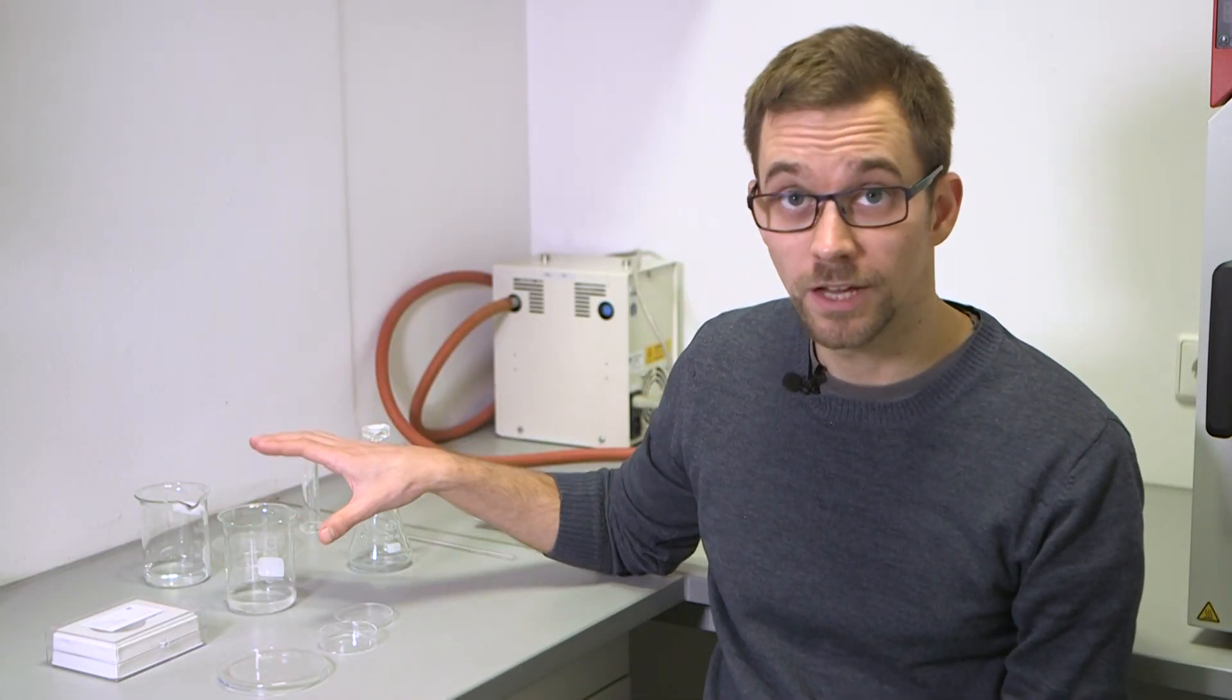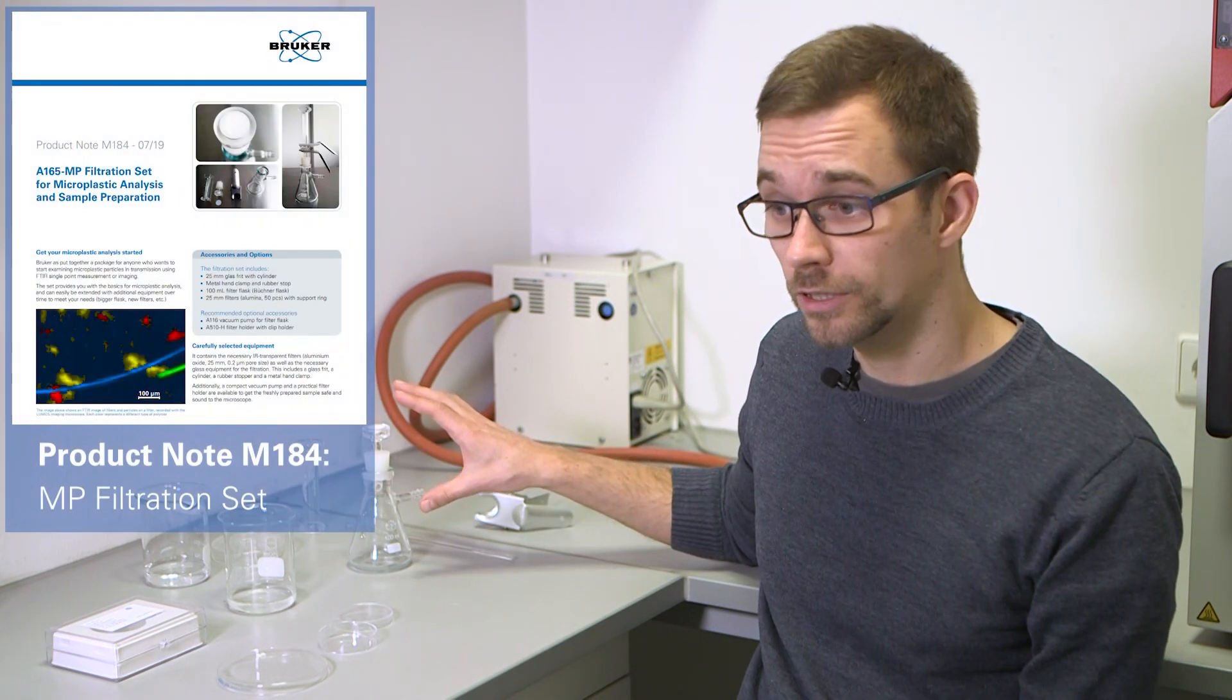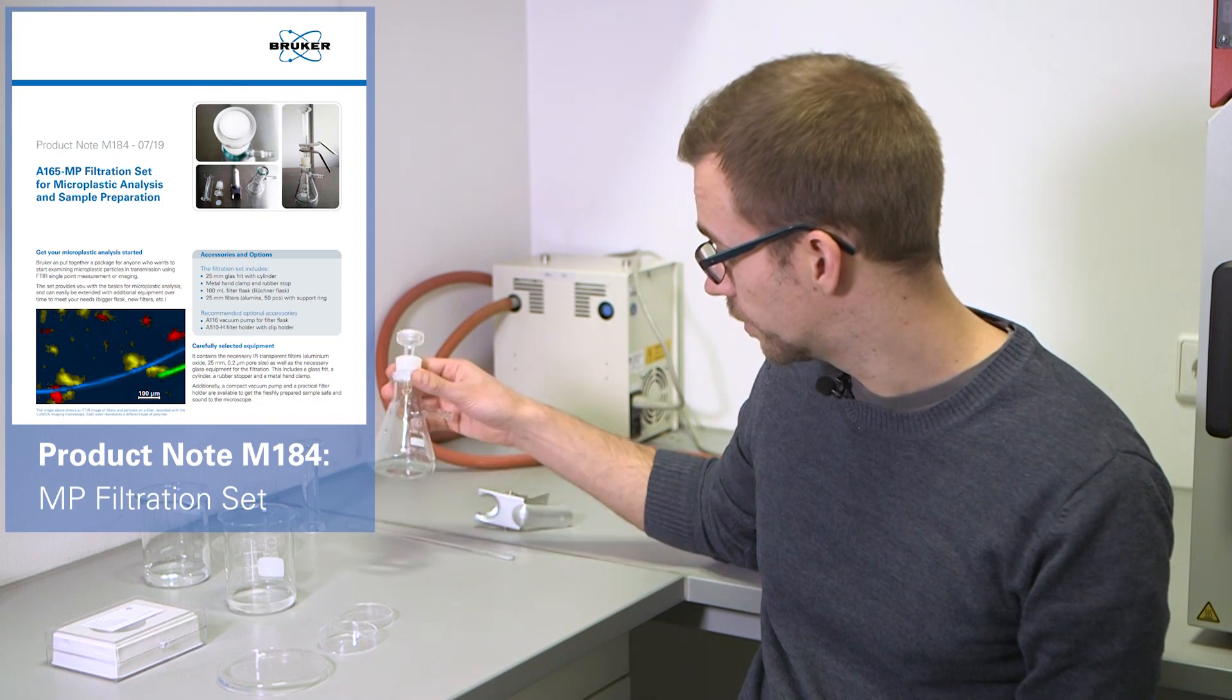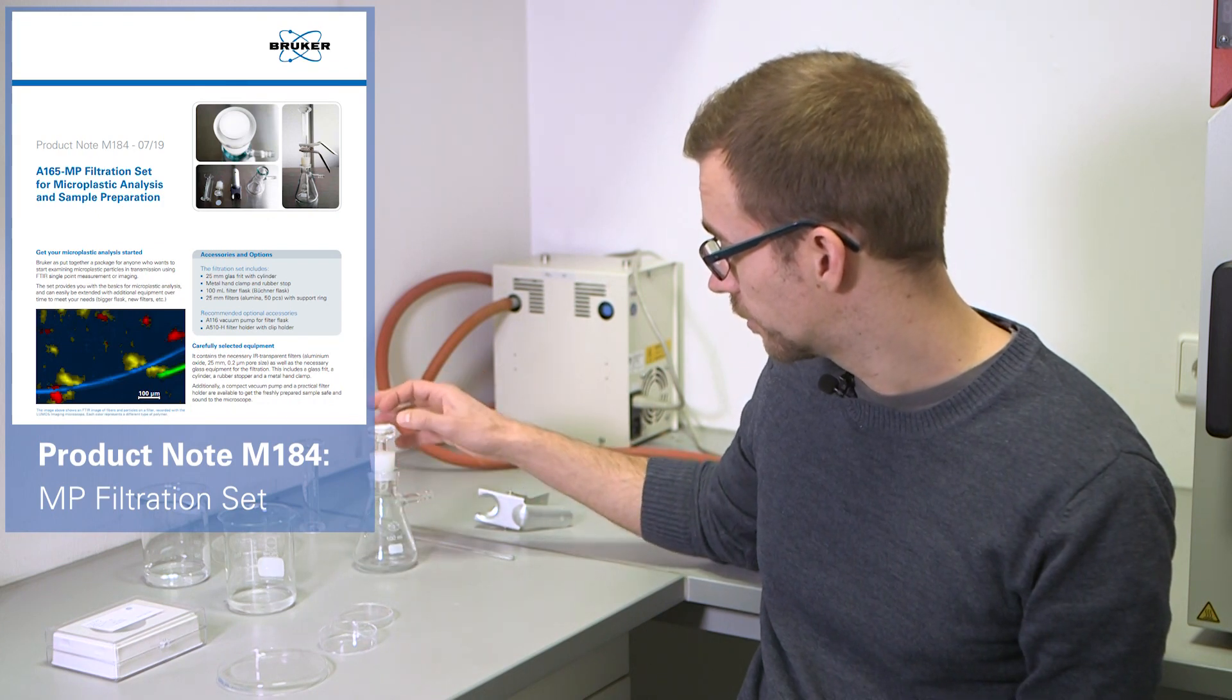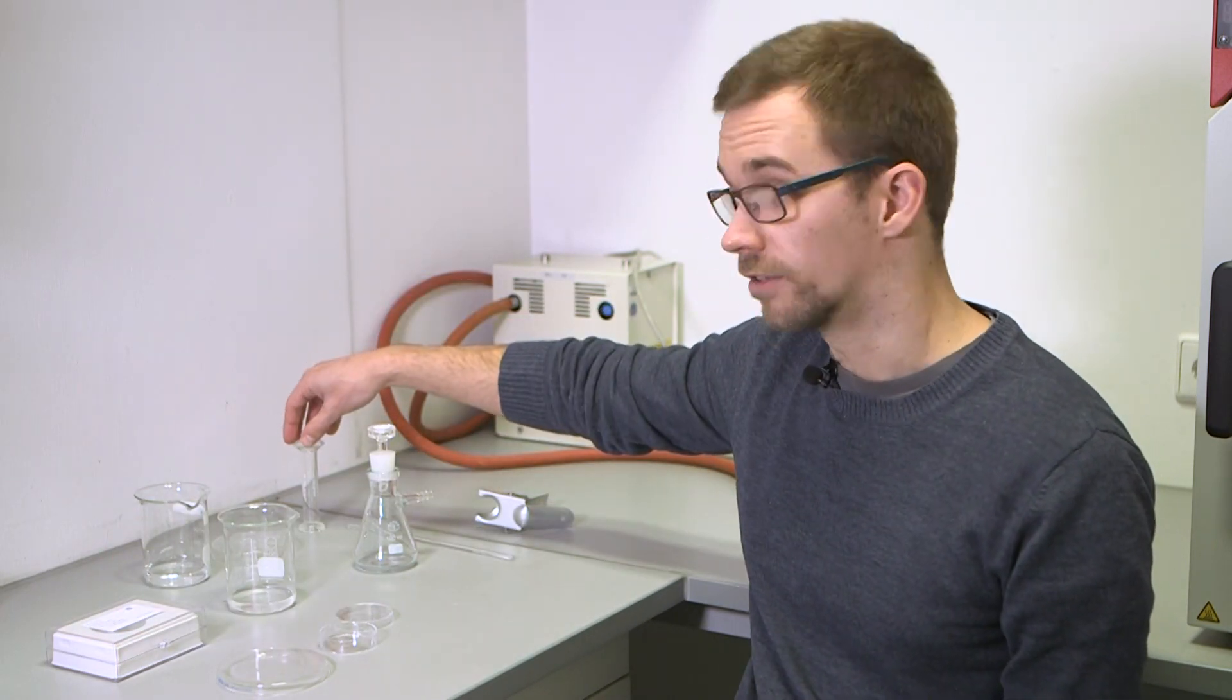So now that our sample is dissolved, we're going to filter it using this apparatus. This is offered directly from Bruker and consists of the suction flask, this rubber stop and the glass frit, a pack of filters, this clamp and the cylinder on top.